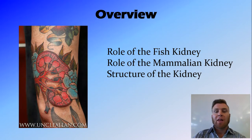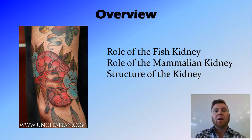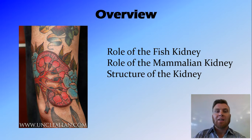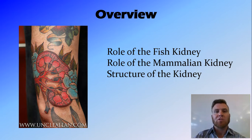In this video we've looked at the role of the fish kidney — osmoregulation — and the differences between freshwater and saltwater fish being hypertonic and hypotonic to their surroundings respectively. We've discussed the role of the mammalian kidney: filtration, reabsorption, and excretion. And we've looked at the structure of the mammalian kidney, fed by the renal artery into the outer cortex, with the nephron dipping into the medulla, and collecting ducts leading to the renal pelvis where urine is transported to the bladder.